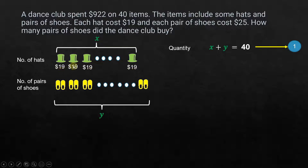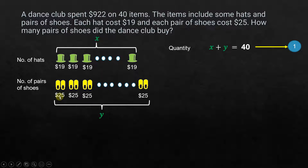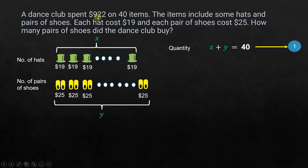Each hat costs $19, so X times $19 gives the total cost of the hats. Similarly, each pair of shoes costs $25, so Y times $25 gives the total cost of the pairs of shoes. When we add these two costs together, that gives the total amount of money spent.